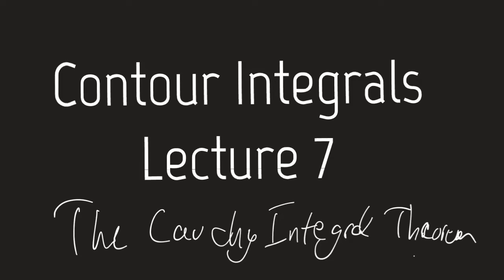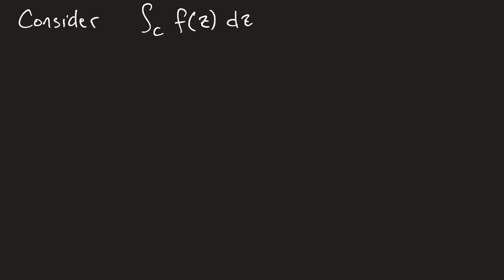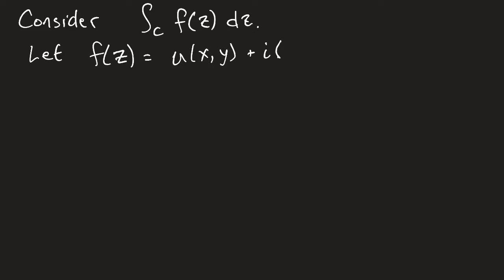We want to start out by considering a generic contour integral — the integral of some function f around some contour C. Let's express f in terms of its rectangular coordinates. So we let f(z) = u(x,y) + i·v(x,y), where z = x + iy.